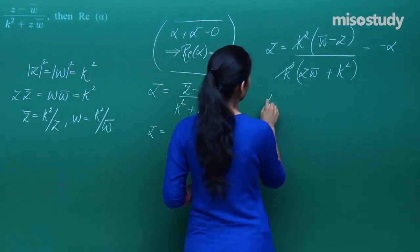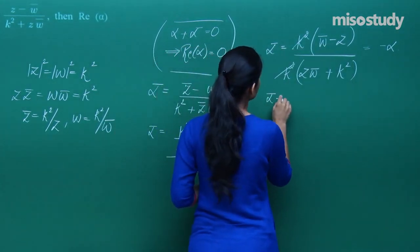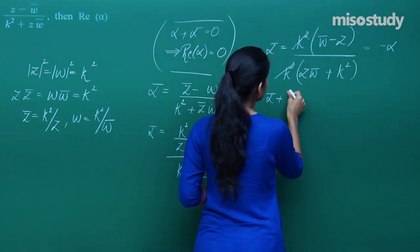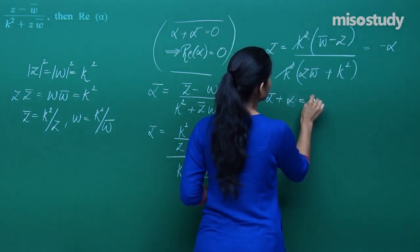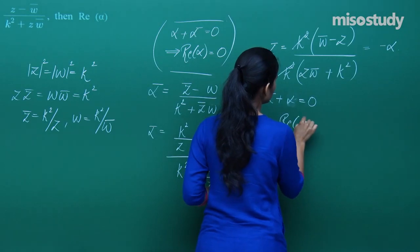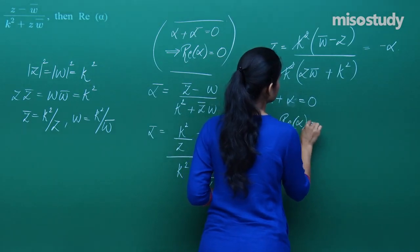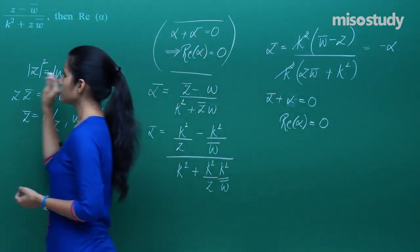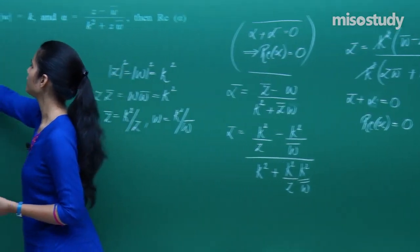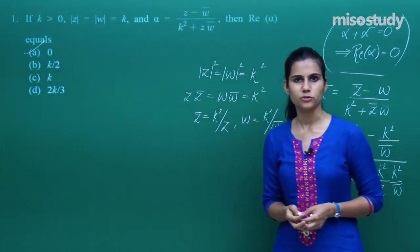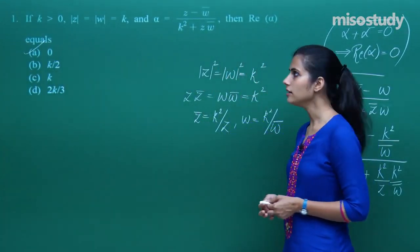Once you get this, you have alpha plus ᾱ = 0, which means the real part of alpha is 0. The question asked for the real part of alpha, so your answer is 0.